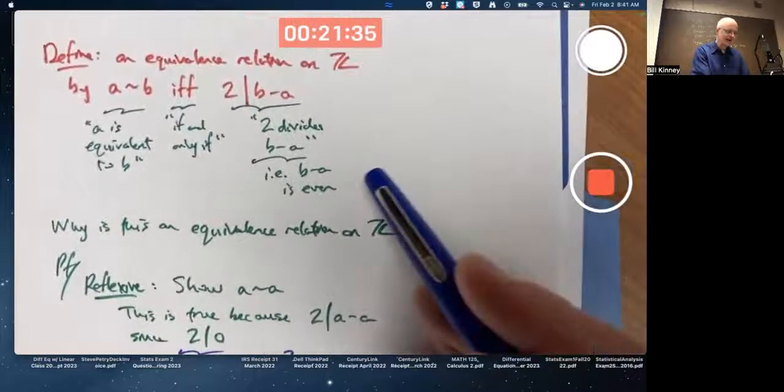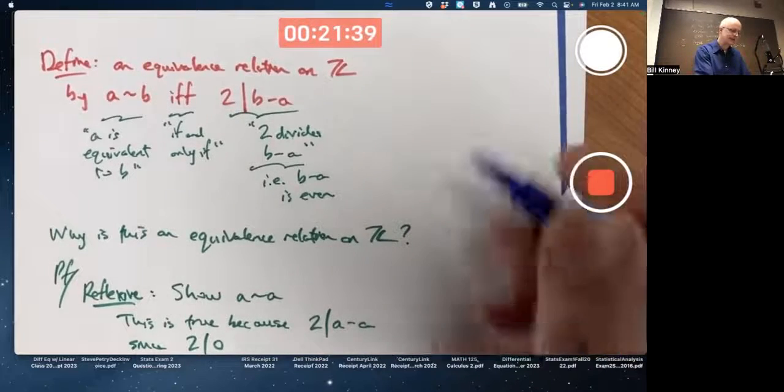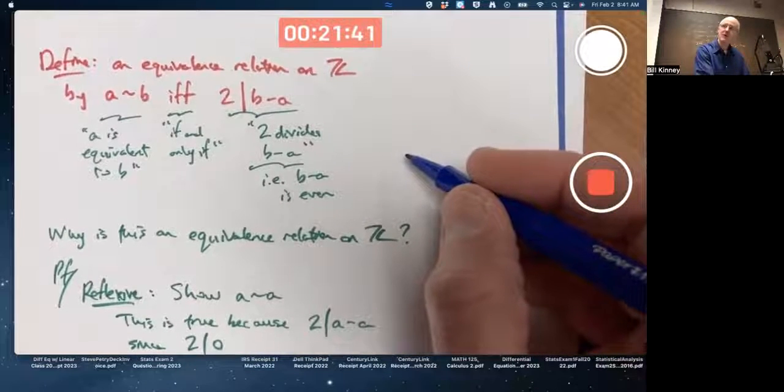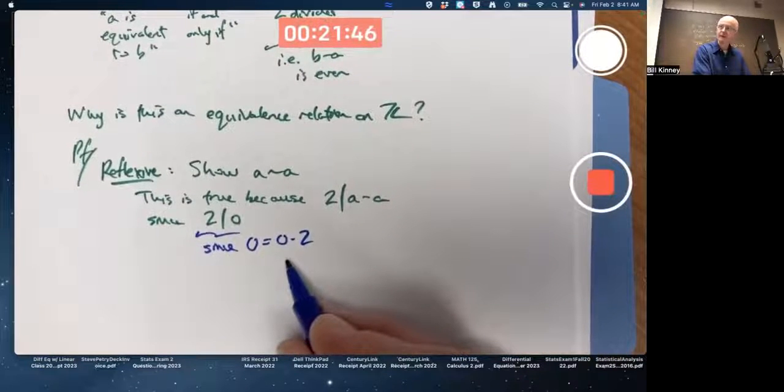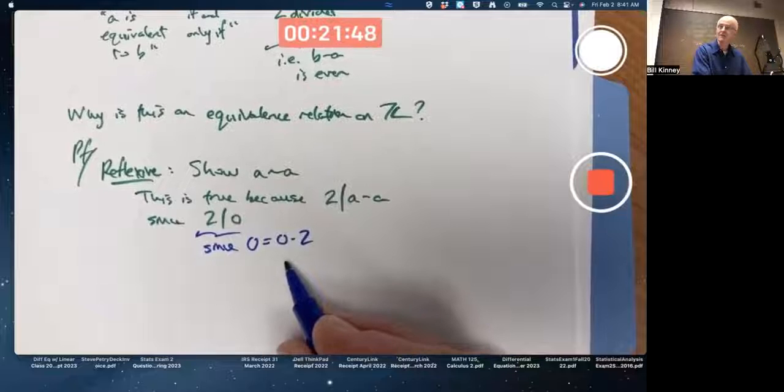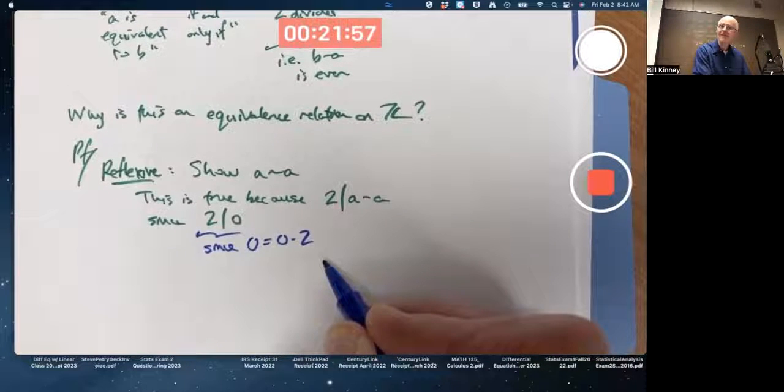Dividing, two dividing a number means that number is even. It means it's two times some integer. Yeah, zero is two times some integer. Two times zero. Maybe I should have written this the other way. Two times zero. It's even.